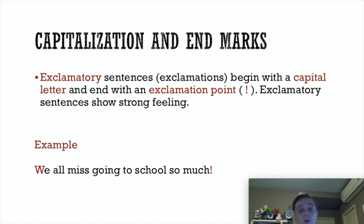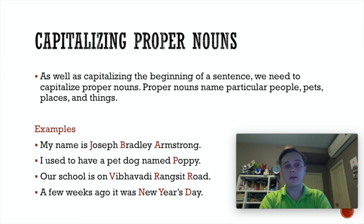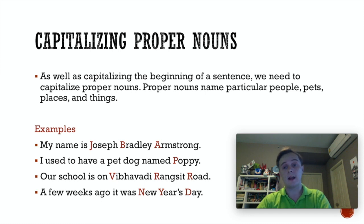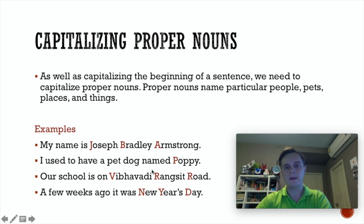As well as starting sentences with capital letters, you need to start proper nouns with capital letters. Proper nouns name particular people, pets, places, or things. So my name is Joseph Bradley Armstrong — I need to capitalise all of those words. I used to have a pet dog named Poppy. You wouldn't capitalise 'pet dog' because that's just the name of the animal, but you would capitalise the pet's name, Poppy.